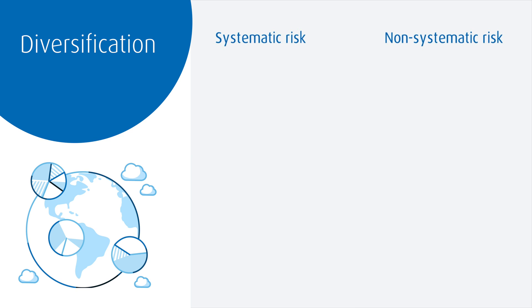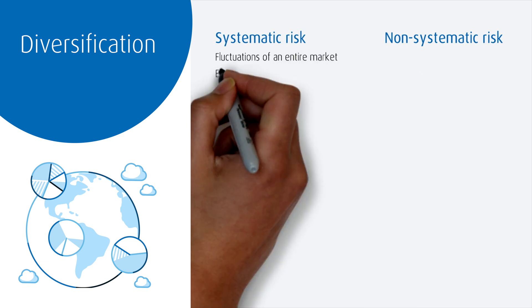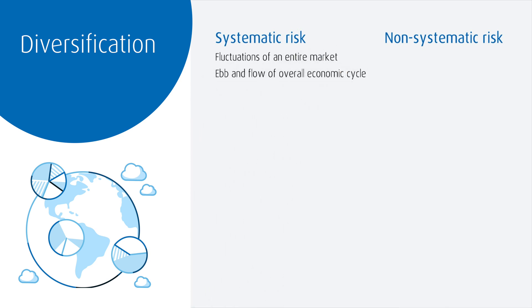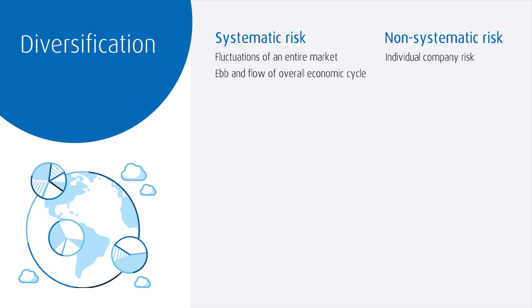Within any market there are two aspects of risk to consider: systematic risk and non-systematic risk. Systematic risk is the fluctuations of the whole market, normally due to economic cycles. Every market — whether it be the Canadian stock market or the U.S. bond market — has its own systematic risk. Non-systematic risk is the risk of an individual company.